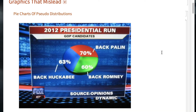Here is a pie chart of support for various presidential candidates in 2012. You could answer that you back more than one person — Sarah Palin and Mitt Romney. But when you add up these numbers, they don't come anywhere near summing to one. And eyeballing it, the size of the slices don't correspond to the numeric values — the 70 doesn't look bigger than the 60. A crazy chart.